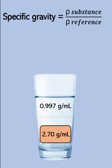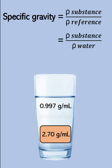Specific gravity is equal to the density of the substance over the density of a reference. In most cases, the reference will be water — though not always. But in this case, our reference is water, so we can use this equation.